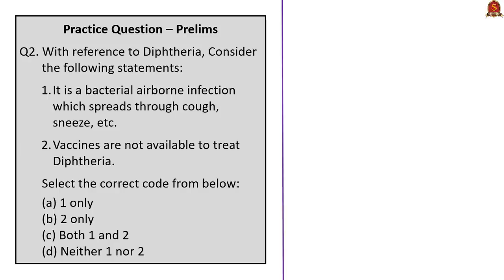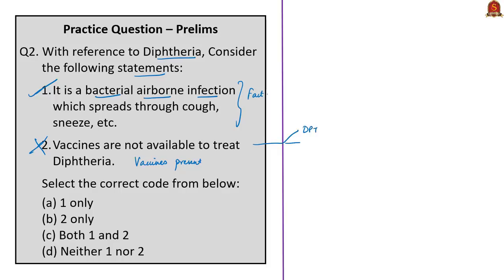Question 2 on diphtheria: Statement 1 — diphtheria is an airborne bacterial infection — is correct. Statement 2 is wrong because diphtheria vaccines are available, given in combination as DPT or pentavalent vaccine. The correct answer is Option A — 1 only. Question 3 on AWACS: The correct answer is Option B — an airborne surveillance radar. The 'airborne' and 'warning' keywords help eliminate other options; option B covers every type of surveillance in the air and is the most relevant. AWACS can detect threats, provide early warning of enemy aircraft and missiles, and direct its own aircraft and air defense systems to neutralize the threat.